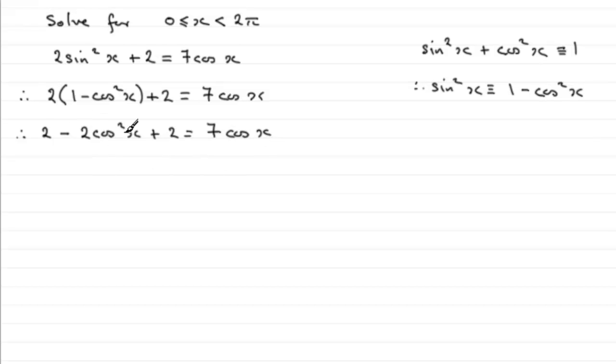And like all quadratic equations, it'd be good to have this term here as a positive value, so I'm going to add 2cos²x to both sides. So if we do that, we're going to have 2cos²x and then we'll follow it with the +7cosx. Now on this left-hand side we've got 2 + 2 which is 4, but if we subtract 4 from both sides we end up with -4 = 0.